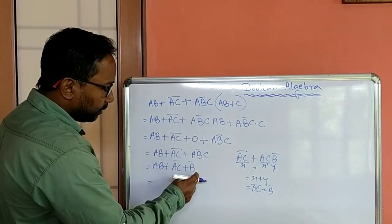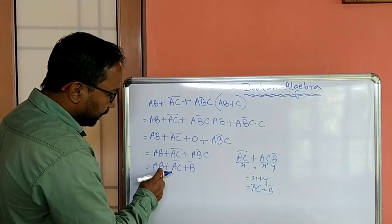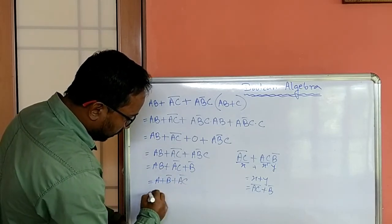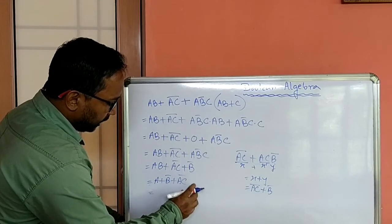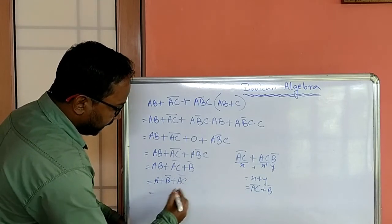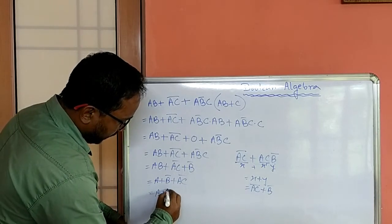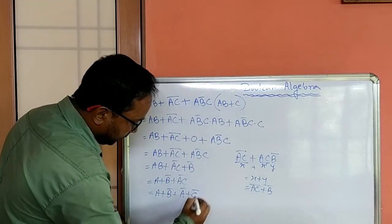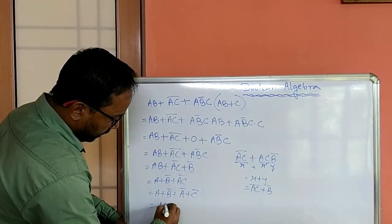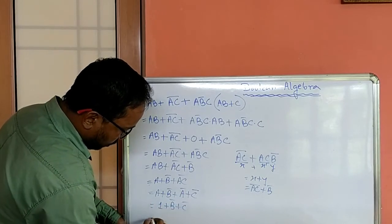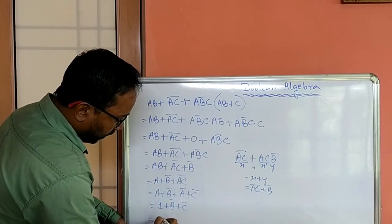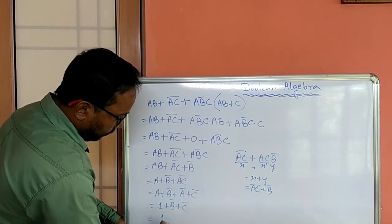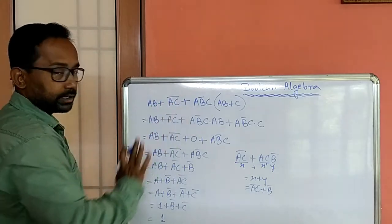Now from this, again according to the distributive law, b not plus b a means a plus b not. And here ac whole not. Now we will put this in De Morgan's law to find out the equivalent of ac not. ab not plus ac whole not equals a not plus c not. Now a plus a not equals 1. That 1 plus b not plus c not. So 1 plus b not equals 1 according to the property of 1. And that 1 plus c not equals again 1. So ultimately the final value is 1, which is the simplified value of this expression.